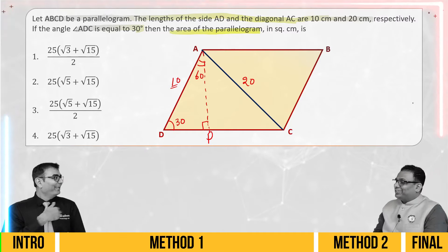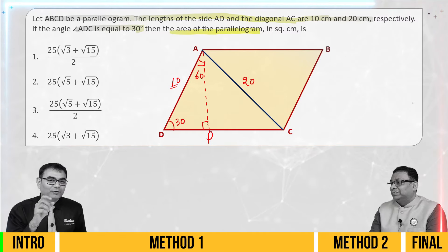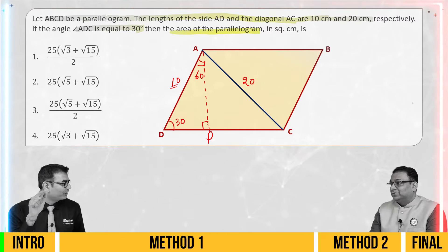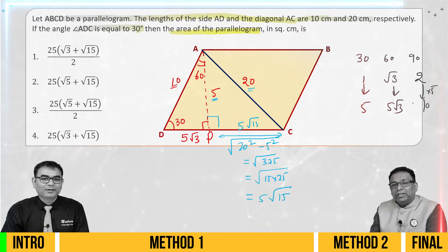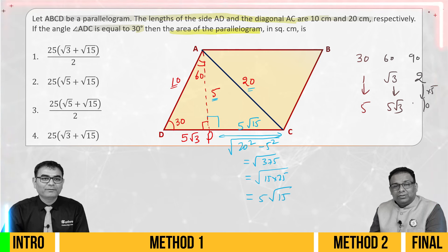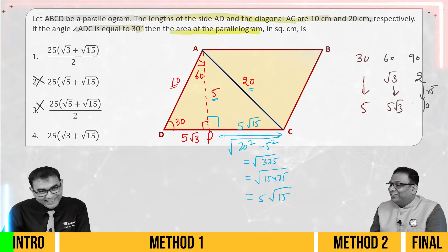30, 60, 90. Which strike? I remember, sir. It's a ratio, sir — 1 is to root 3 is to 2. That's right. I'll put it on 5 root 15. Sir, you should see the option — it should be a combo of root 3 and root 15. So root 5 and root 15 should be like this. It won't be option number 3. Sir, this one is not easy.